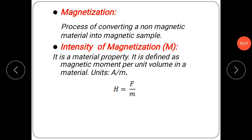Hello everyone. The next point is the basic concept of magnetization. Magnetization is the process of converting non-magnetic materials into magnetic sample. The magnetization is denoted by capital M, where M is equal to mu_M divided by V.